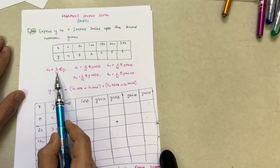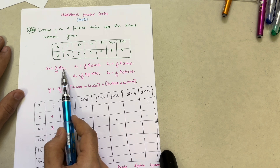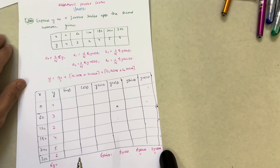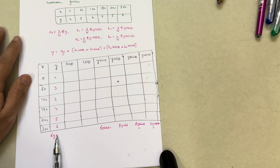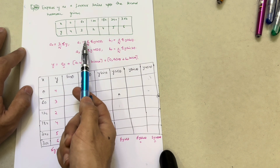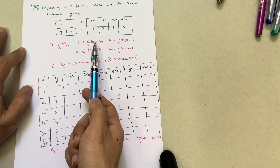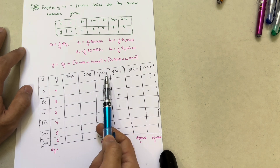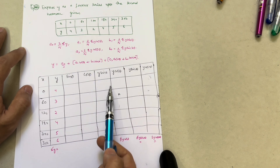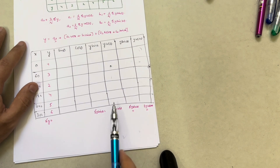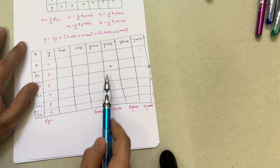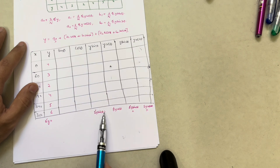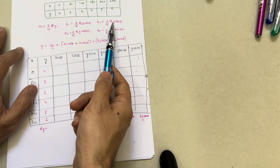A0 is equal to (2/N) × summation of Y. So we simply sum up the Y values to get the summation of Y term. Next, A1 is equal to (2/N) × summation of Y·cos(θ), so we need summation of Y·cos(θ). In the table we write down Y·cos(θ) and Y·sin(θ) columns so that we can sum up those values to get the required summations.